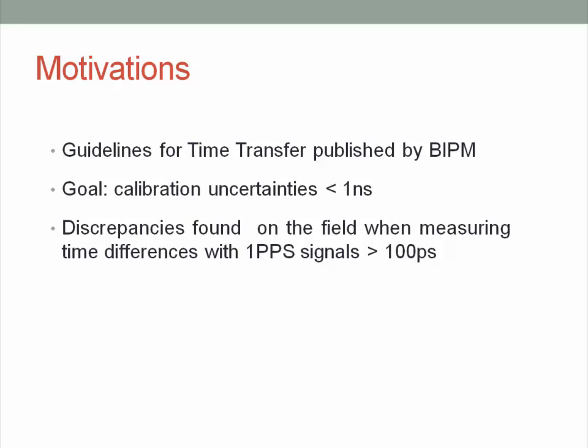Why did we do this work? Right now the BIPM is creating a living document with guidelines for time transfer, and the goal of the community is to get calibration uncertainties that are going to be below one nanosecond. But when we are measuring time differences of PPS, we have found discrepancies that are above 100 picoseconds and we don't know why we get them. And this contribution begins to be significant for the overall budget.